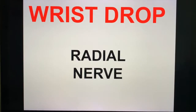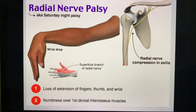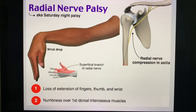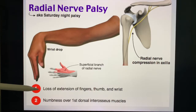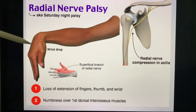The wrist drop is due to injury of the radial nerve. Radial nerve palsy is also known as Saturday night palsy. The clinical manifestations include loss of extension of the fingers, the thumbs, and the wrists — that's your classic wrist drop — and numbness over the first dorsal interosseous muscle.